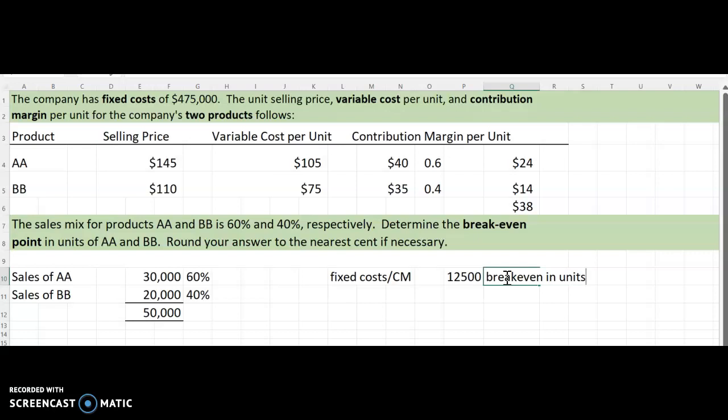But we need to know what it is for both products, for AA and for BB. So we're going to take that 12,500 and first we're going to multiply it by our 0.60. And that is going to be break-even in units for AA.